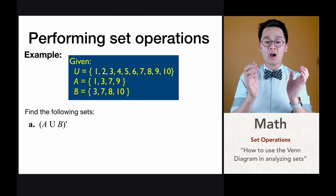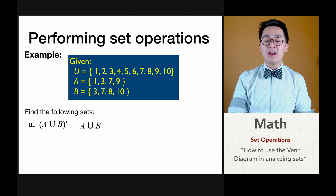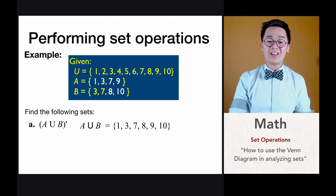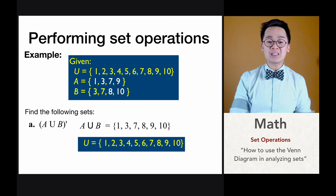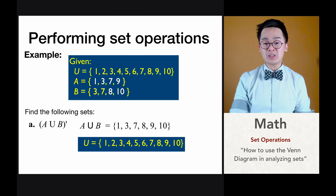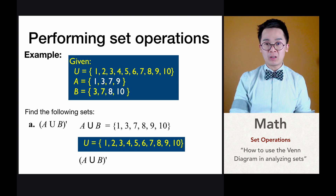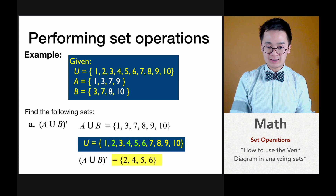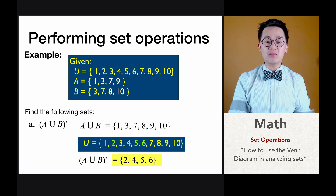For the complement of A union B, we first find A union B — all distinct elements from A and B — which gives us 1, 3, 7, 9, 8 and 10. Then, going back to the union set 1 through 10, we include all numbers not found in A union B. The complement of A union B is therefore 2, 4, 5 and 6.